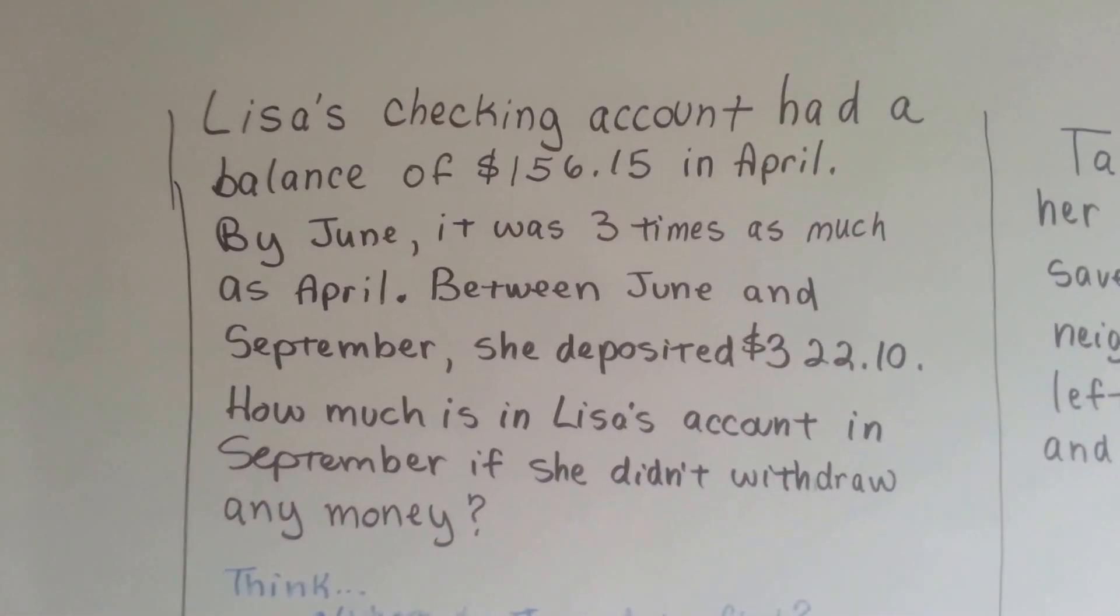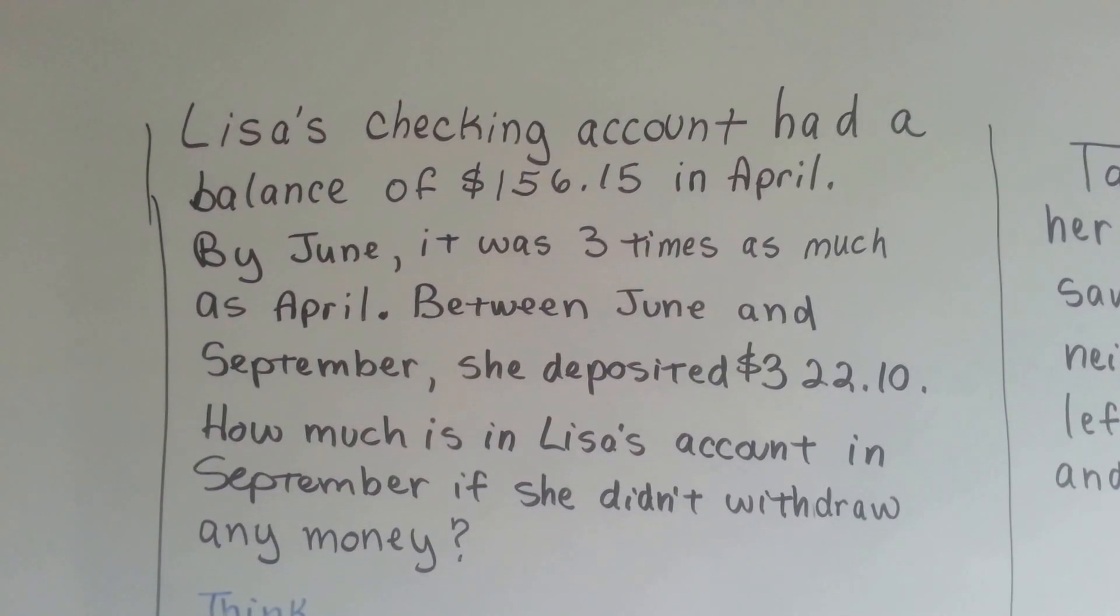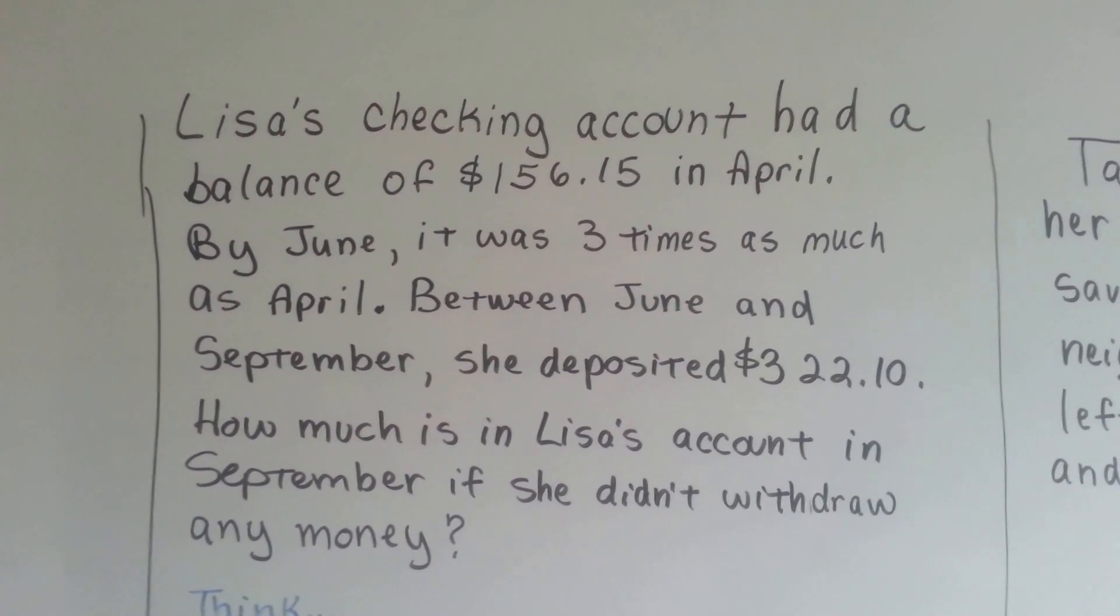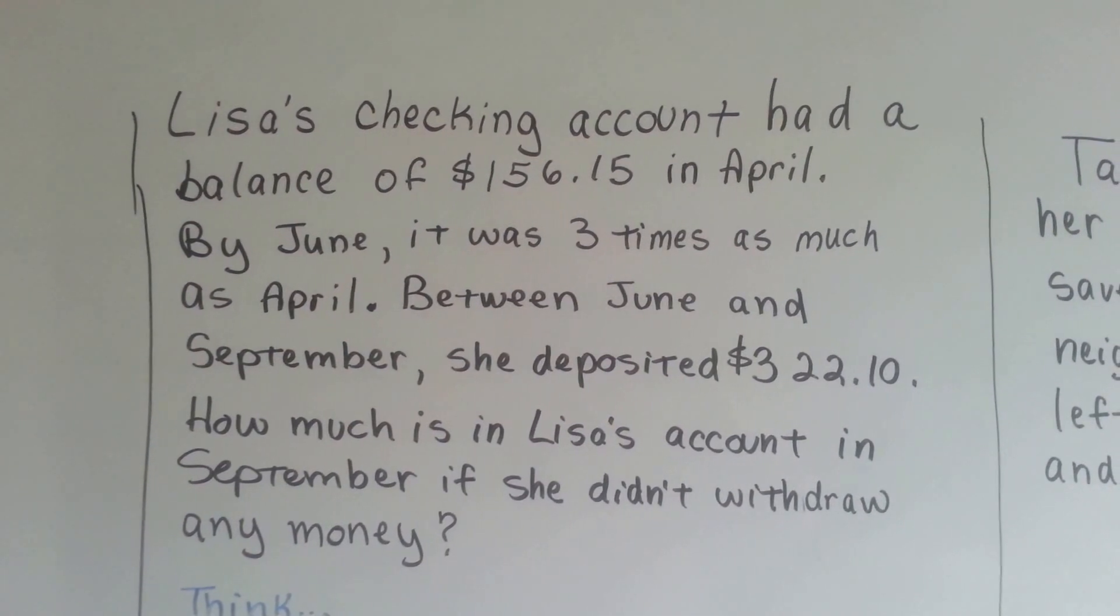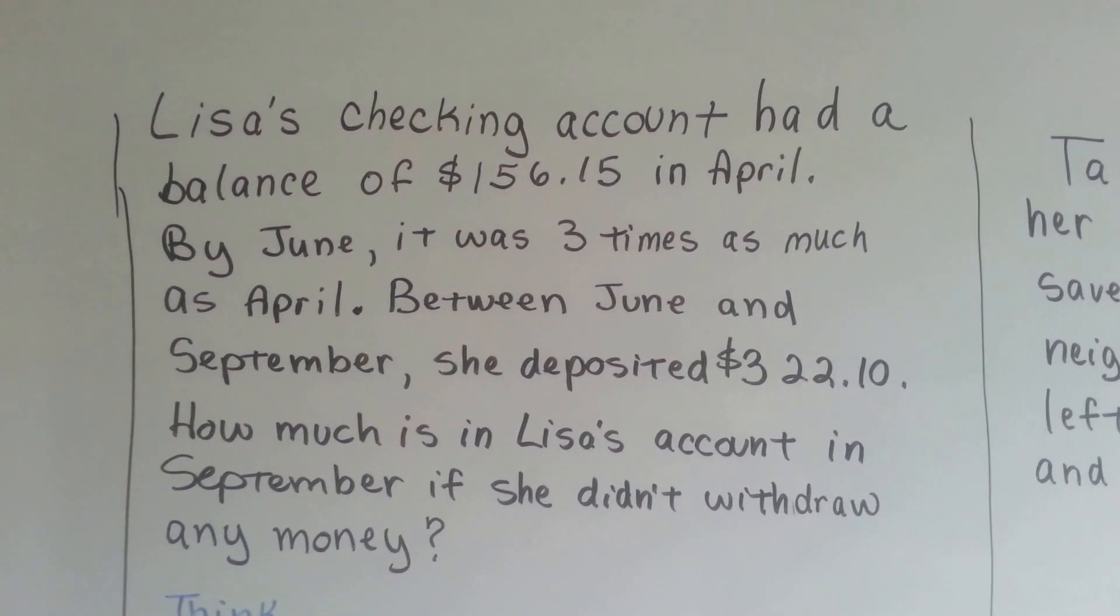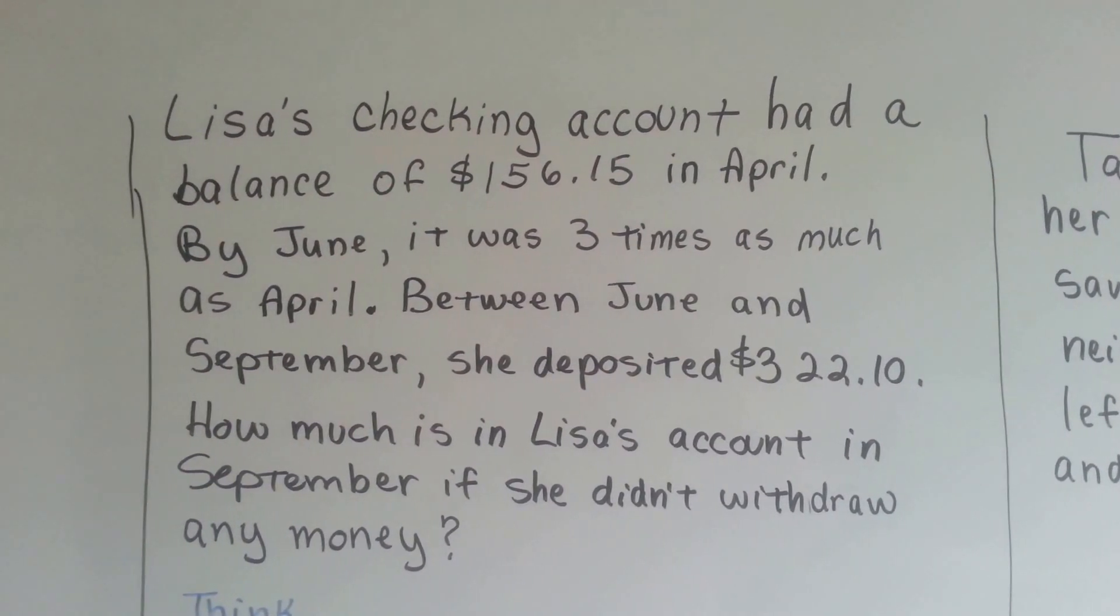Here's another one. Lisa's checking account had a balance of $156.15 in April. By June, it was three times as much as April. Between June and September, she deposited $322.10. How much is in Lisa's account in September if she didn't withdraw any money?